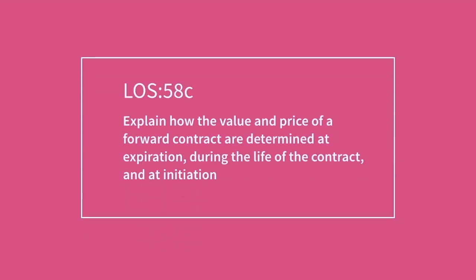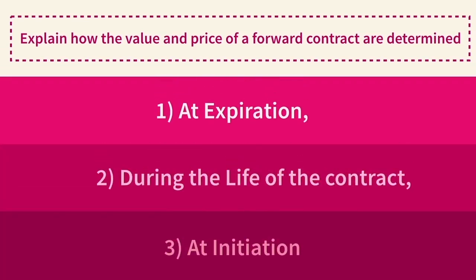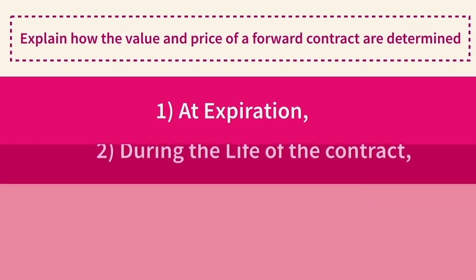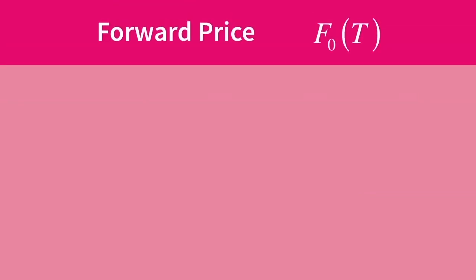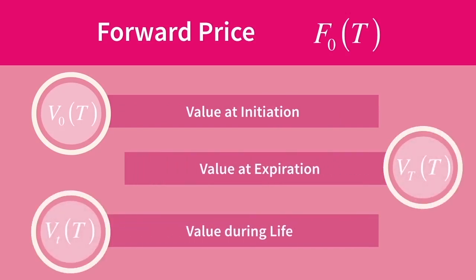Explain how the value and price of a forward contract are determined at expiration, during the life of the contract, and at initiation. The wording of this LOS is somewhat confusing — you would be forgiven for assuming that we need to calculate a price and a value at each of the three stages: initiation, during, and expiration. What we are going to find is that there is one forward price which is determined at initiation, and from there we have three values to calculate: value at initiation, value at expiration, and value during the life of the contract.